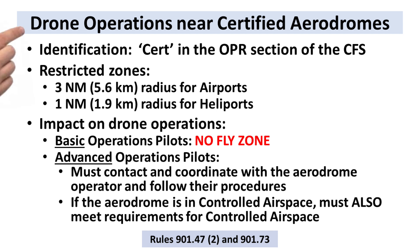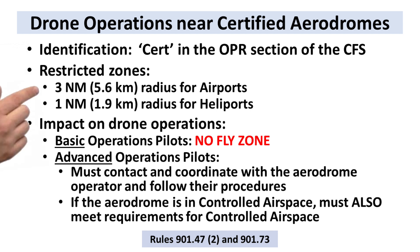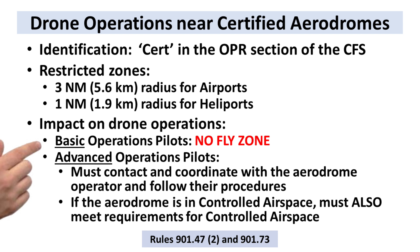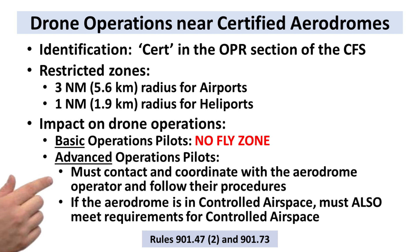Next, drone operations around certified aerodromes. You can identify these because they have the abbreviation CERT in the OPR section of their CFS listing. There's a drone restriction zone of 3 nautical miles or 5.6 kilometers around airports, and 1 nautical mile or 1.9 kilometers around heliports. For basic operations drone pilots, these zones are no-fly zones. For advanced operations pilots, you must contact the aerodrome and, assuming they give you permission, coordinate your mission following their procedures for locations, altitudes, and perhaps the timing of your flight. If the aerodrome is also in controlled airspace, you must meet all the requirements for controlled airspace as well, such as the NAV Canada RPAS flight authorization request.